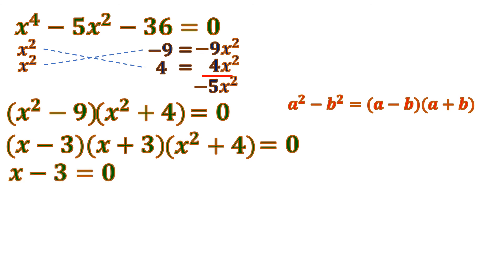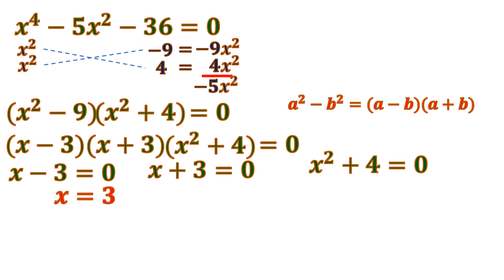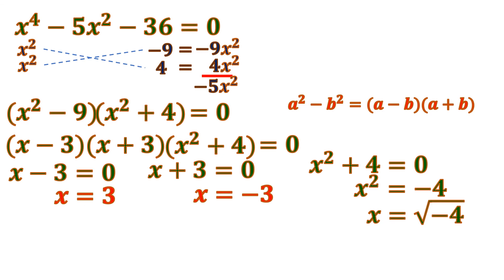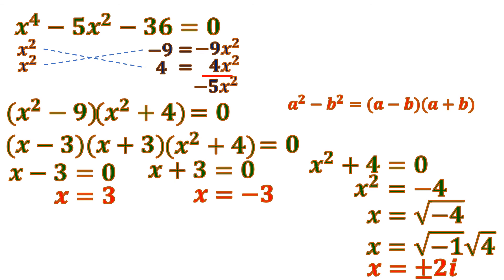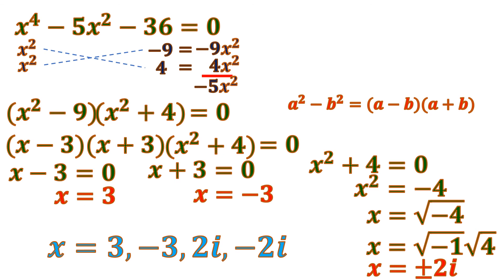Solving for x: x minus 3 equals 0 gives x equals 3; x plus 3 equals 0 gives x equals negative 3; x squared plus 4 equals 0 gives x squared equals negative 4, and taking the square root of both sides gives the square root of negative 4. Separating into square root of negative 1 and square root of 4, we get i times positive or negative 2, so x equals plus or minus 2i. The four roots are 3, negative 3, positive 2i, and negative 2i.